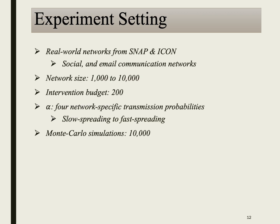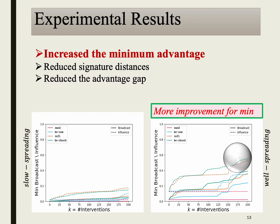We perform experiments on real-world networks ranging from 1,000 to 10,000 nodes in size. We allocate a budget of 200 edges for interventions and consider four network-specific alpha values ranging from slow to fast spreading rates. To estimate the access signatures, we conduct 10,000 simulations.